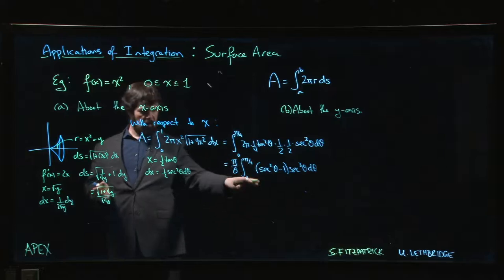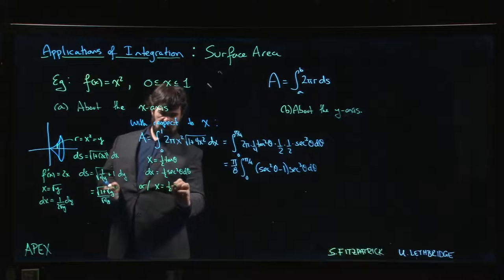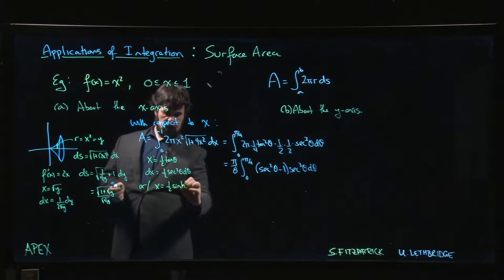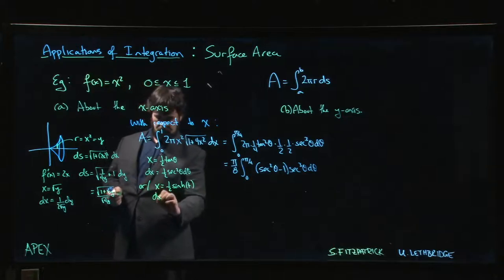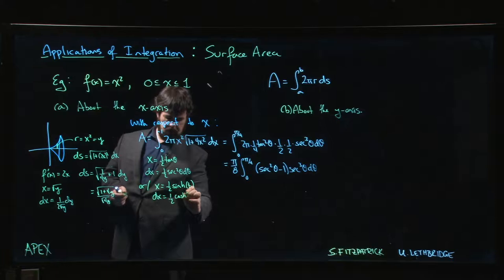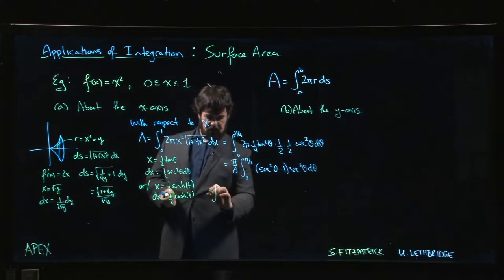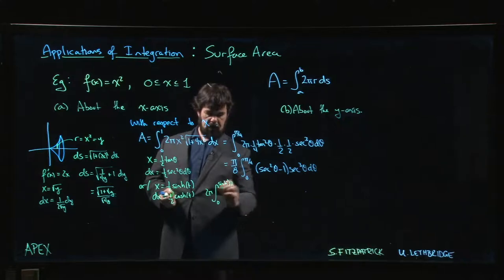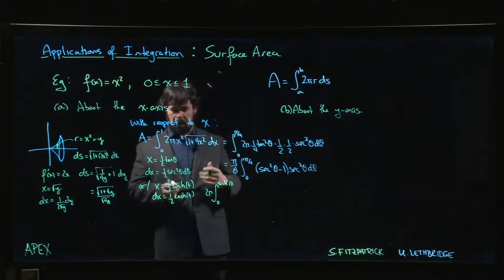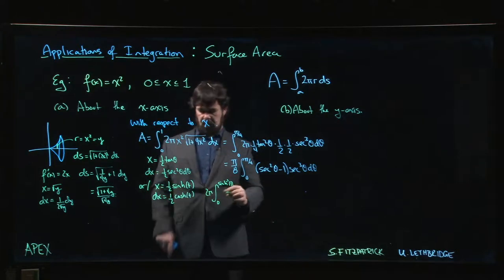The alternative substitution that you could do, and again we're not going to actually evaluate it, we'll just get the setup here. The alternative would be to try one half sinh hyperbolic, dx will be one half cosh hyperbolic. So then you're going to get instead, you would get the integral, you still have that 2π integral from zero to sinh inverse of one, that's like log of root 2 plus 1.